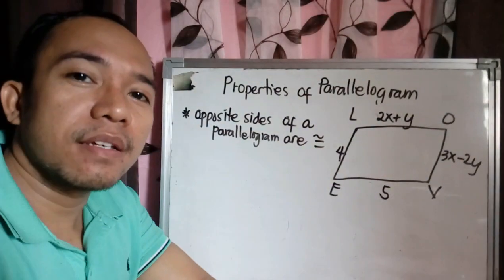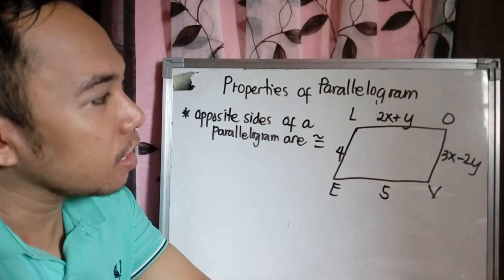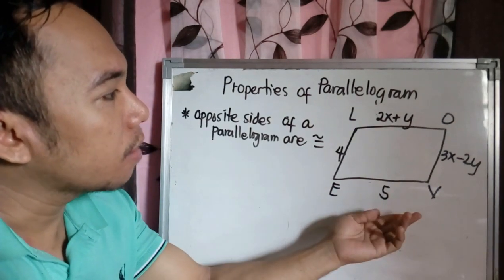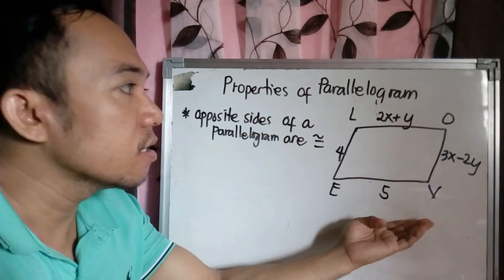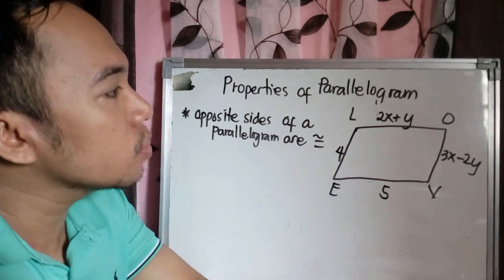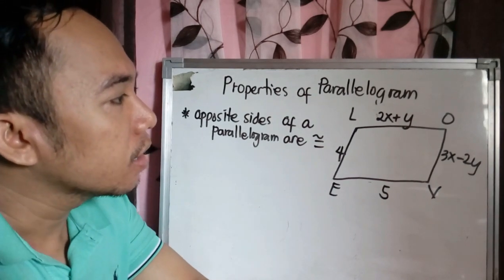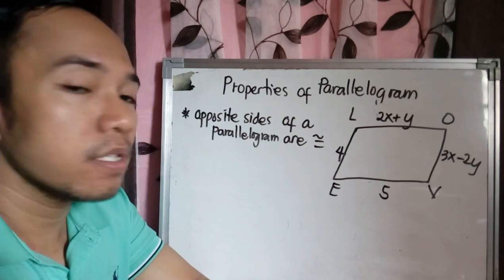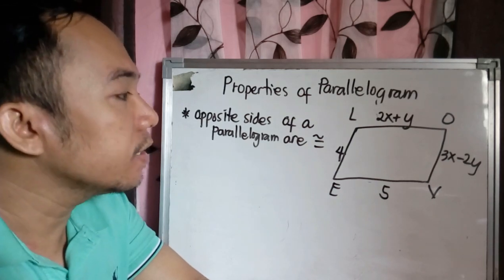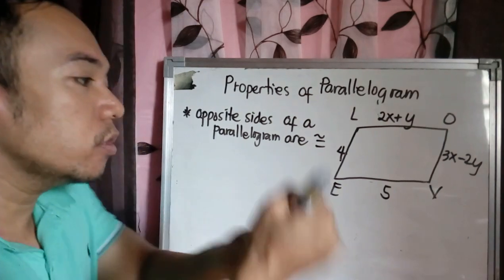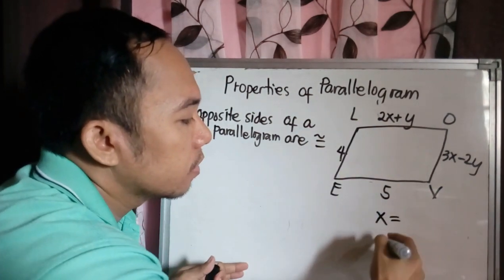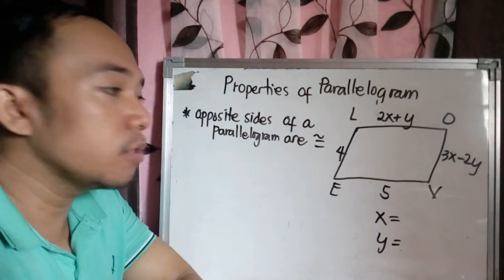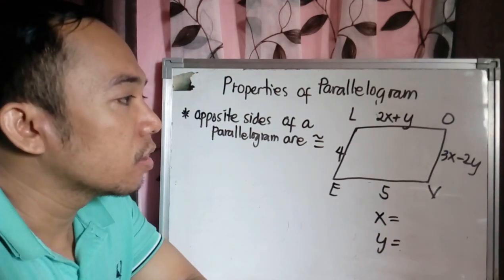Okay, this is our second example. So what if our given measurements are like this? So you have LO equals 2X plus Y, OV equals 3X minus 2Y, EV equals 5, and LE equals 4. So how do we solve here your X value and your Y value? So we will use here 2 equations.